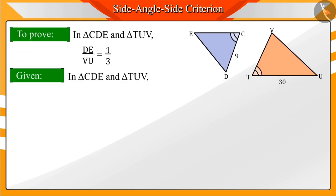In the given figure, side CD equals 9 units and side EC equals 10 units. UT equals 30 units and TV equals 27 units, and also angle C equals angle T.